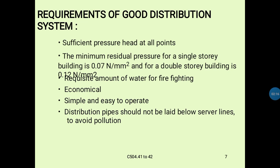Minimum pipe sizes: 100 mm for towns having a population up to 50,000, and 150 mm pipes for those above 50,000. So for a town with a population of 50,000, the minimum pipe size is 100 mm, and for populations above 50,000 the distribution pipe size should be 150 mm.